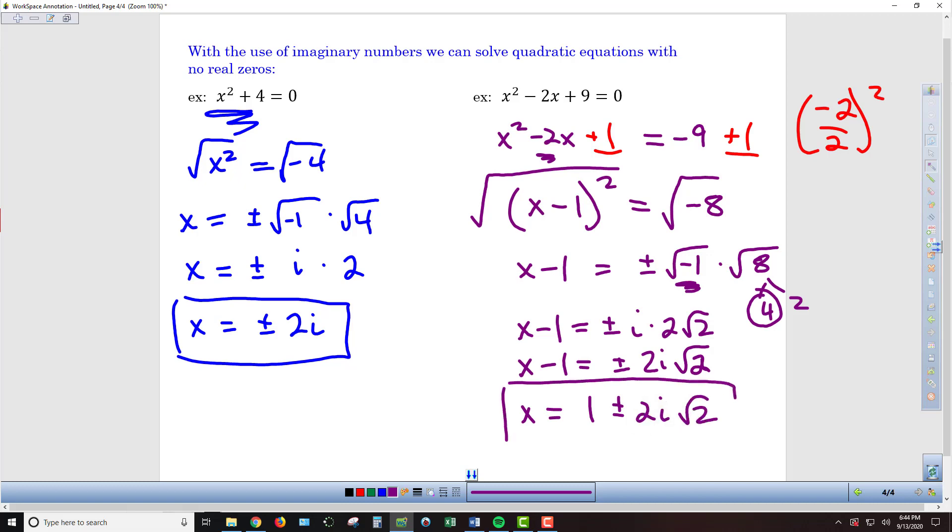We've got two answers once more, 1 + 2i√2 and 1 - 2i√2. So our answers are complex. They have a real and an imaginary part to them in this case.